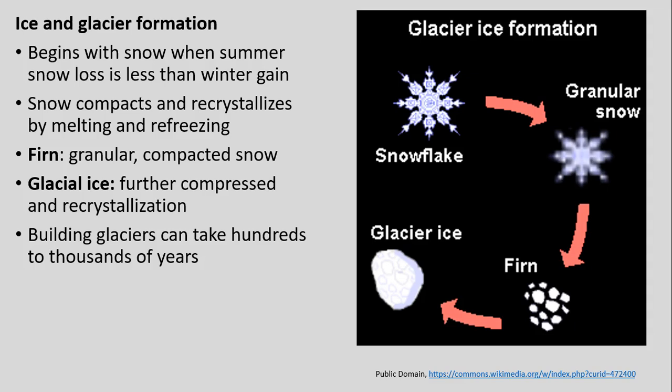We can have some conceptual understanding of how ice and glaciers form. Really it's when we have repeat snow year after year — snow buildup over long periods of time — where summer snow loss is less than winter gain. As that snow compacts and recrystallizes through melting and refreezing, it essentially becomes more dense. The stages go from snow to what we call firn — more granular, compacted snow — and then eventually glacial ice.